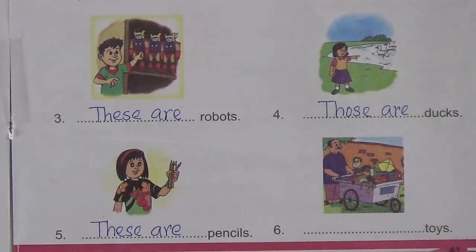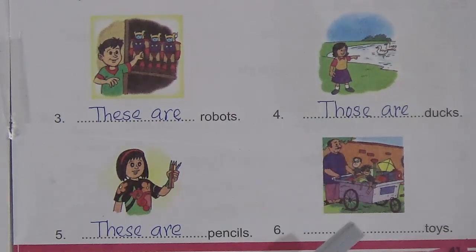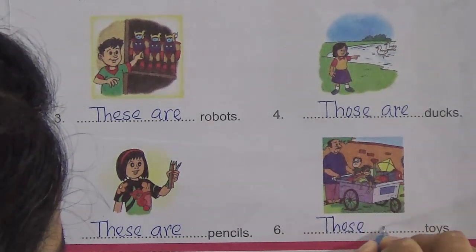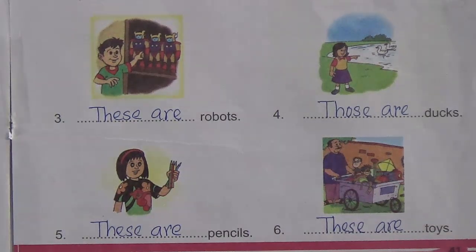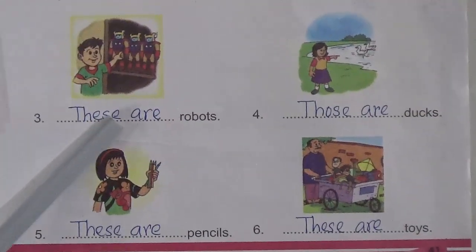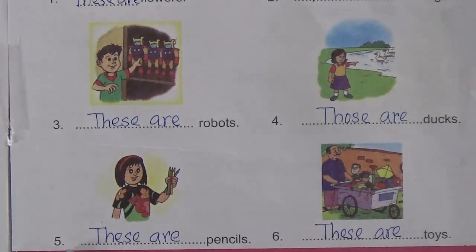And now look at the last one, number six: blank toys. There are many toys — more than one toy — and these toys are near the person. So we will write 'these are'. Our sentences are: number one — these are flowers, number two — those are dogs, number three — these are robots, number four — those are ducks, number five — these are pencils, number six — these are toys.